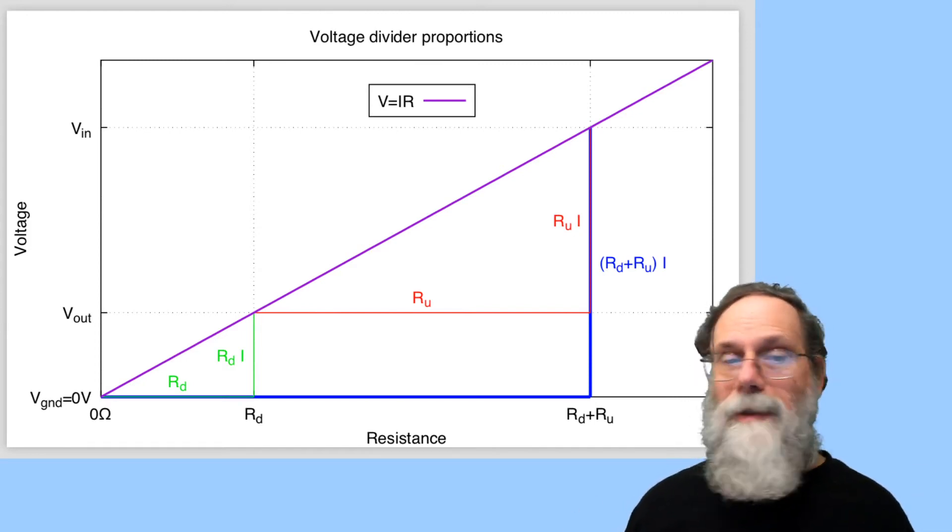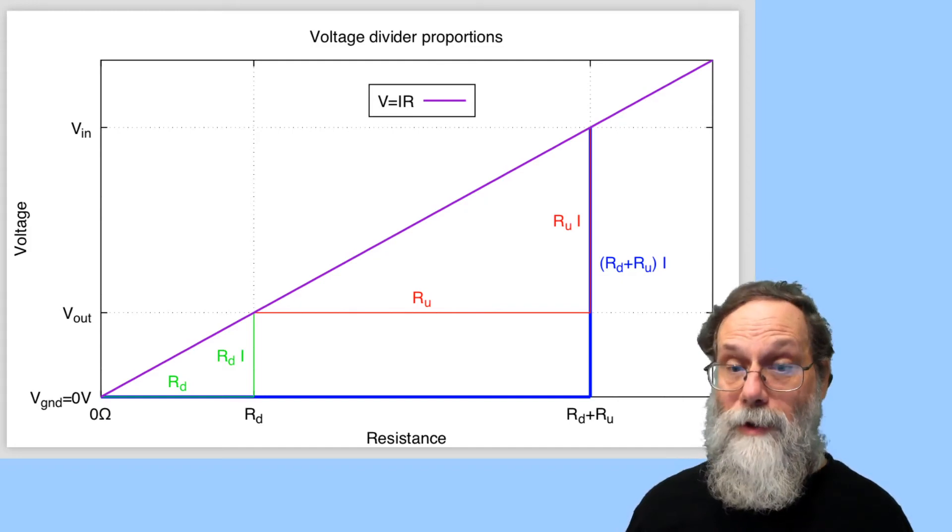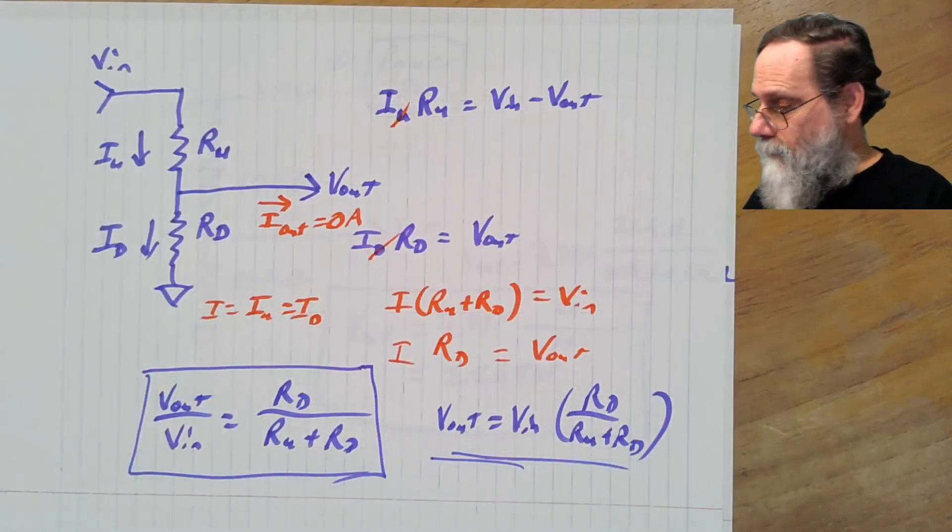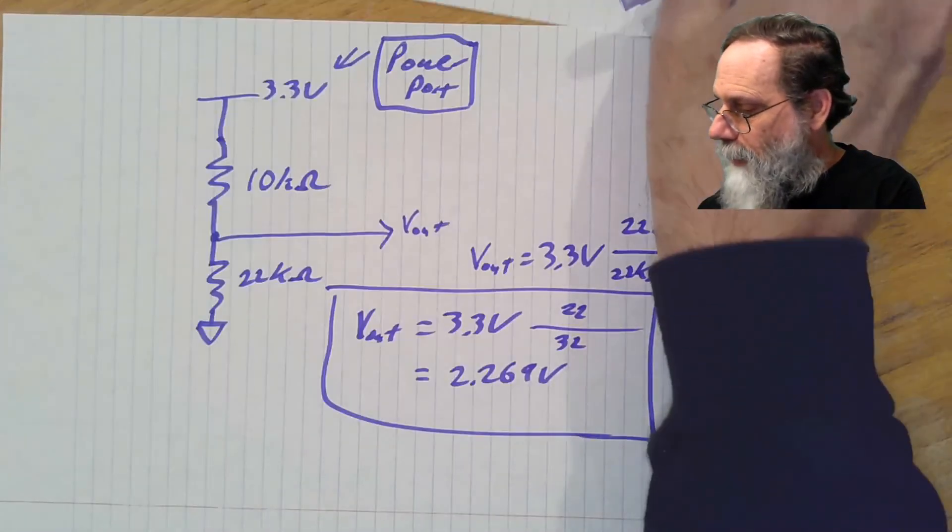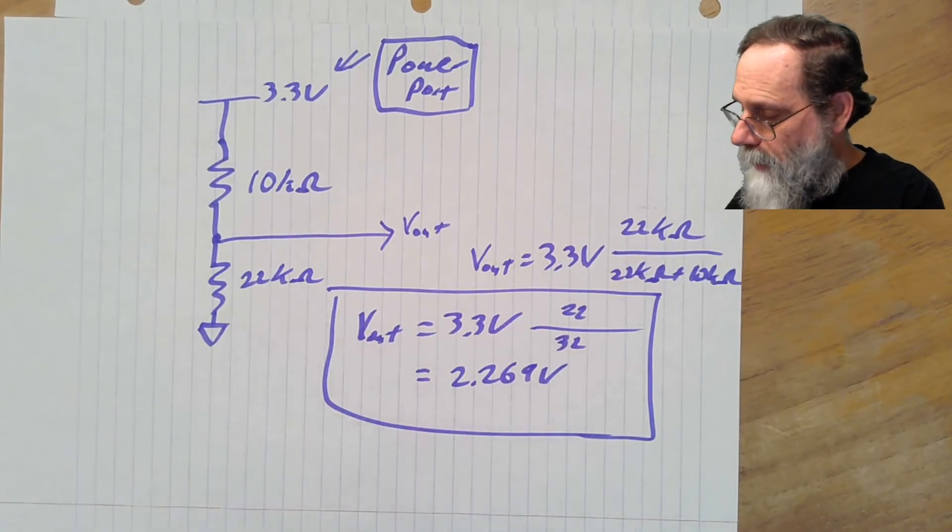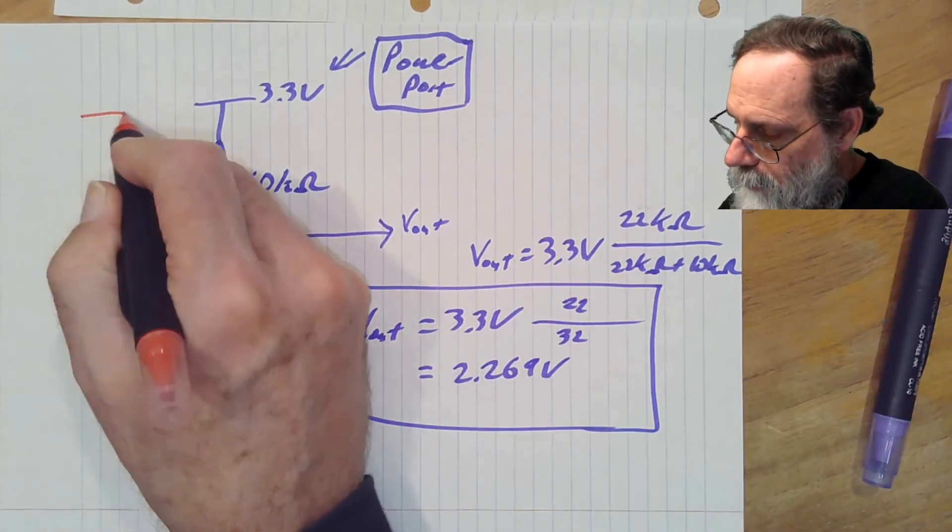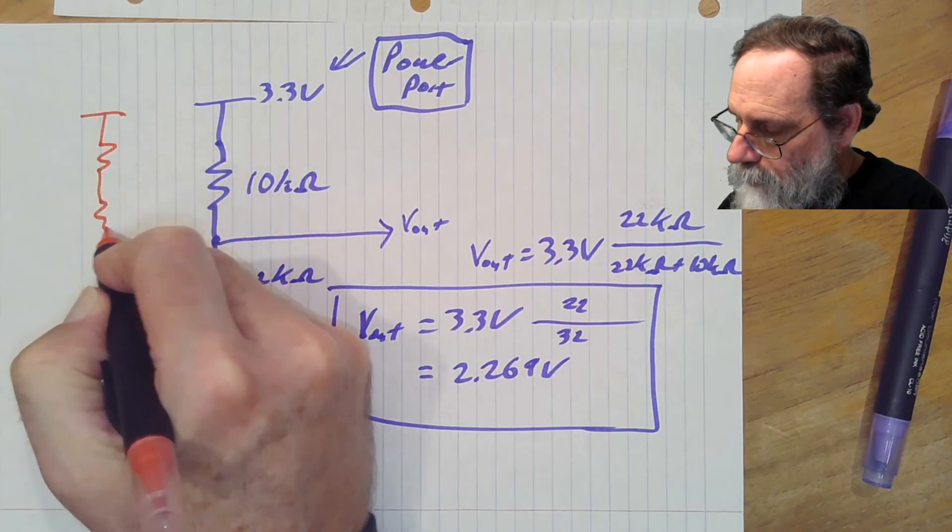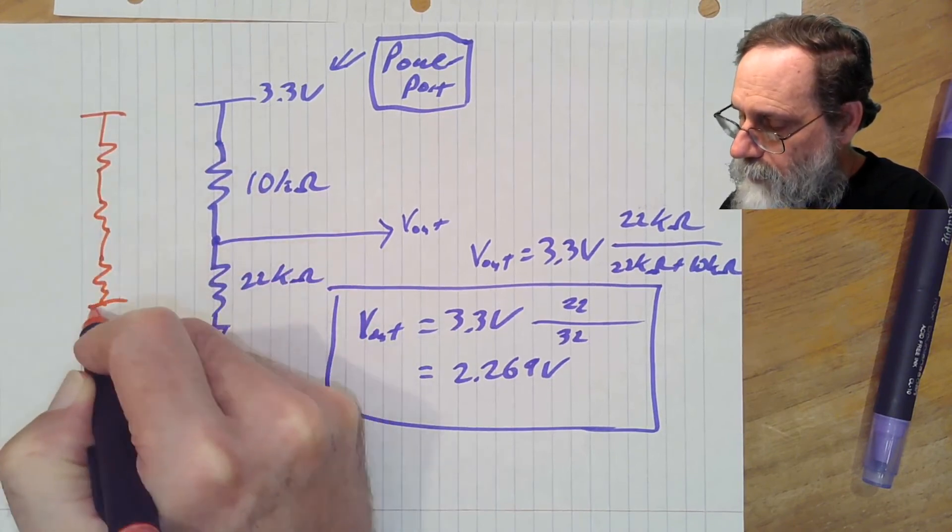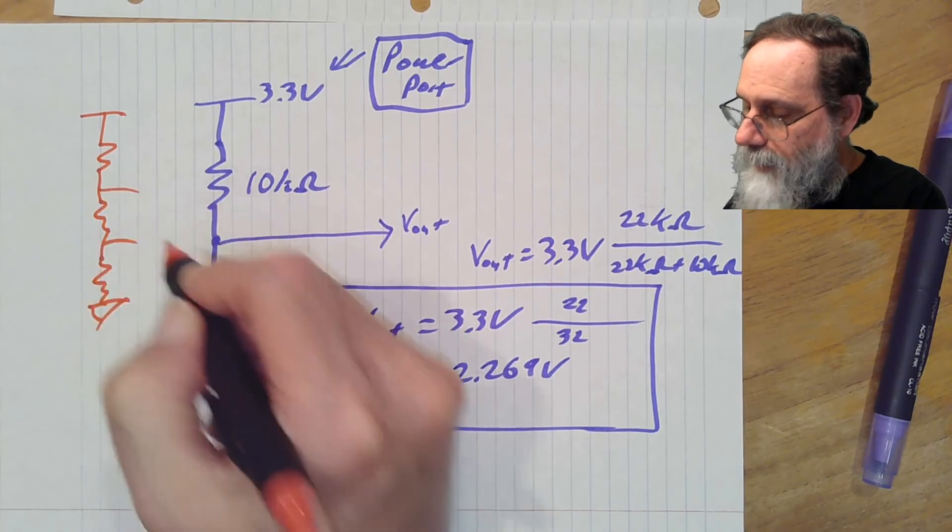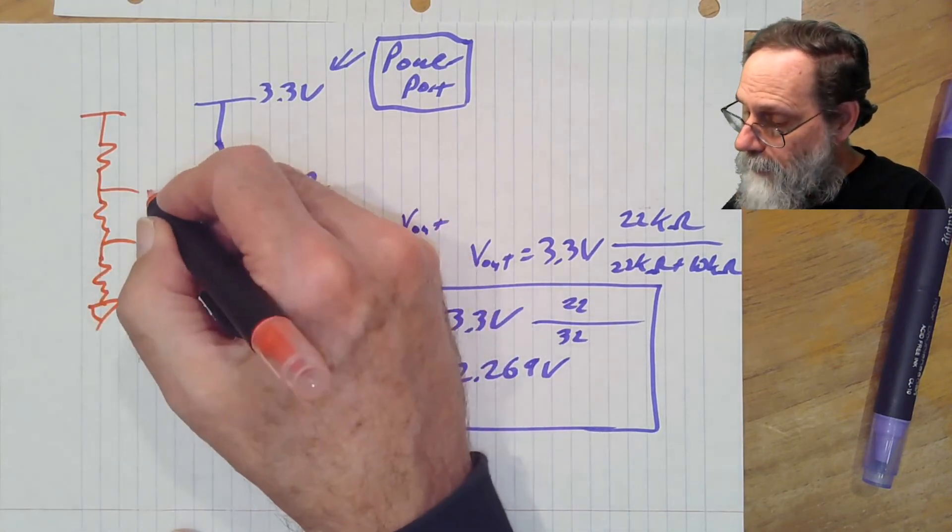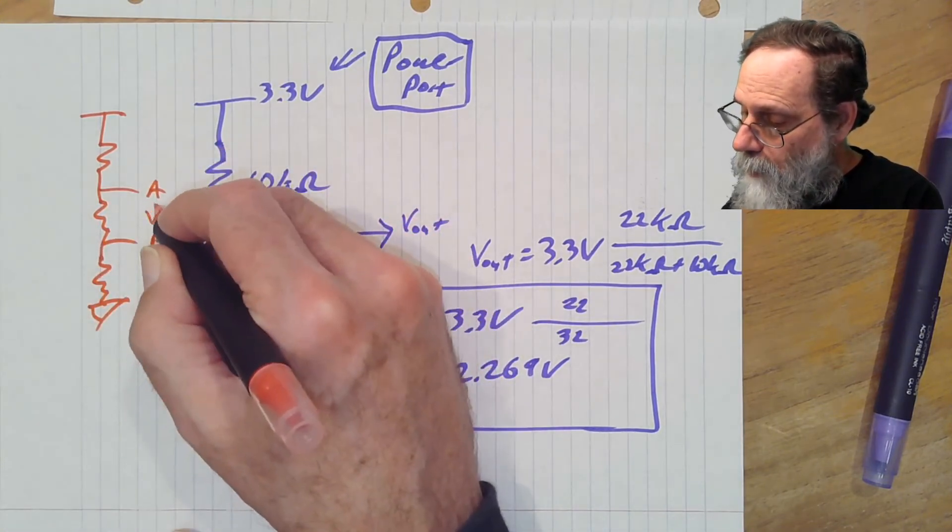Going back to here, what would happen if I took three resistors? And I now have two points in the middle. Let's call this A, this B. What's VAB?